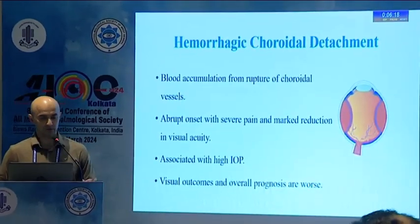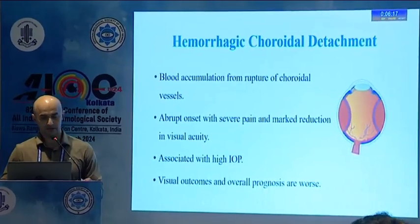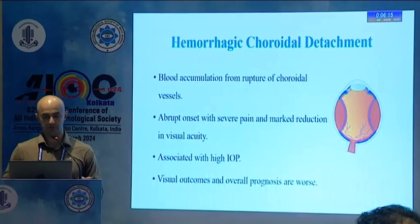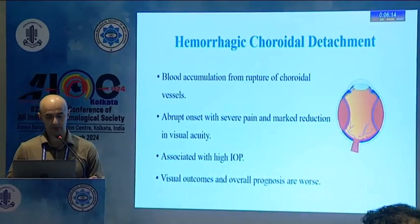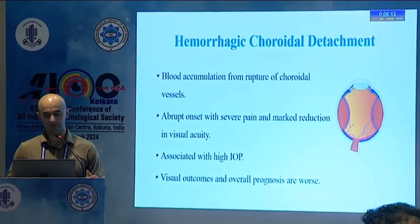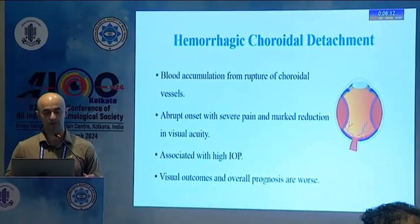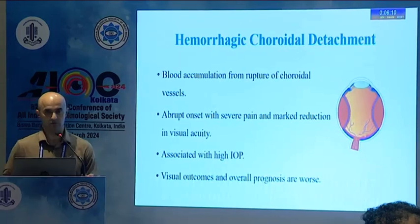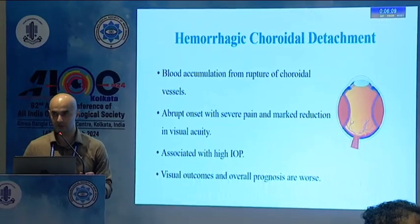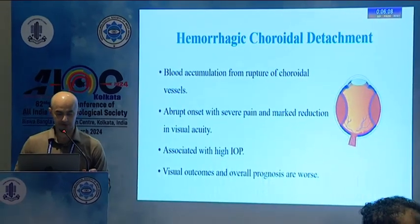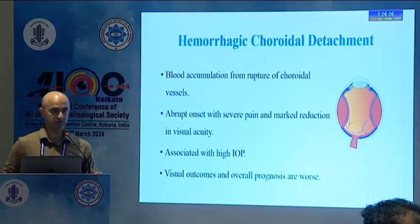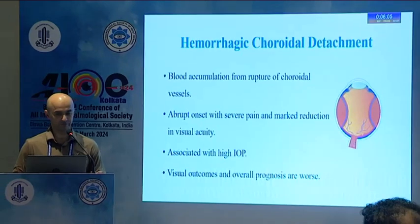Now coming to hemorrhagic choroidal detachment — blood accumulates due to the rupture of choroidal vessels. There is abrupt onset of severe pain, marked reduction in visual acuity, and it is often associated with high intraocular pressure. The prognosis and outcomes are usually not very favorable.